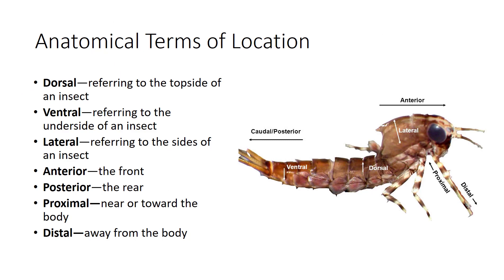First, I'll briefly cover the anatomical terms of location of the insect that you may hear in this presentation. This mayfly niad is labeled with the anatomical terms. We have dorsal and ventral side, or the top and the underside of the insect, while lateral refers to the sides. If I say anterior, it means closer to the front or towards the head, while posterior is towards the rear. Proximal is near the body, and distal is away from the body.